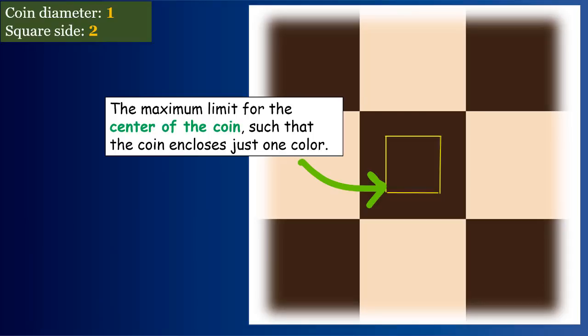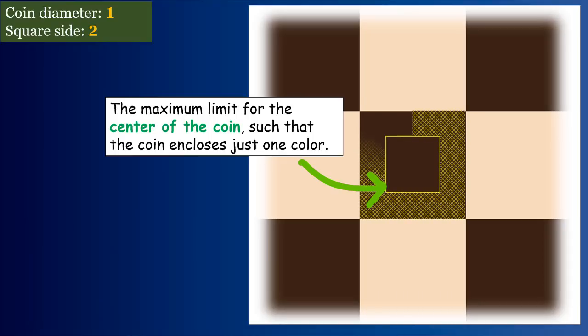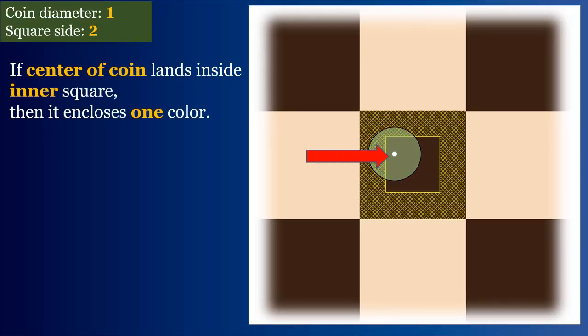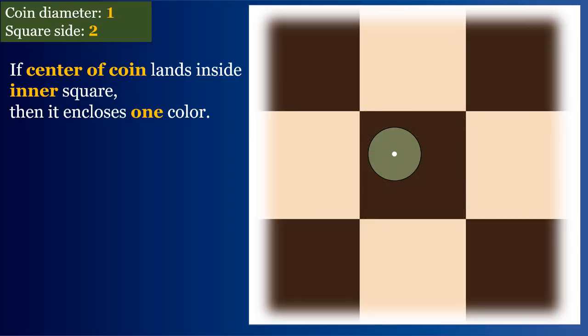which represents the maximum limit for the center of the coin within which the coin encloses just one color. Let's highlight the area beyond this limit with a shaded region. If the center of the coin lands anywhere in the inner square,